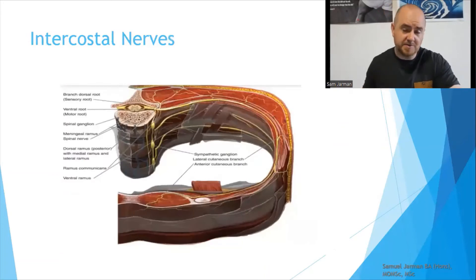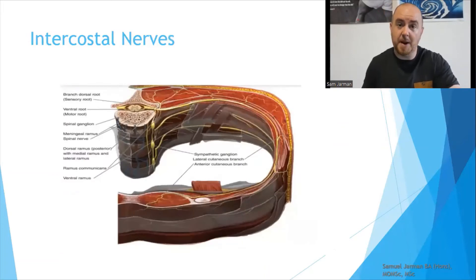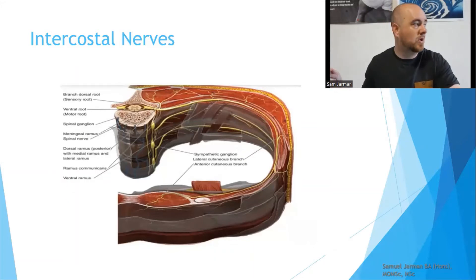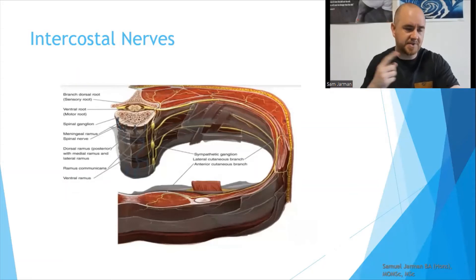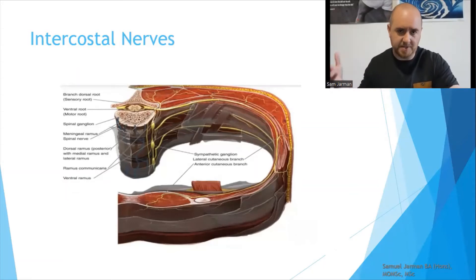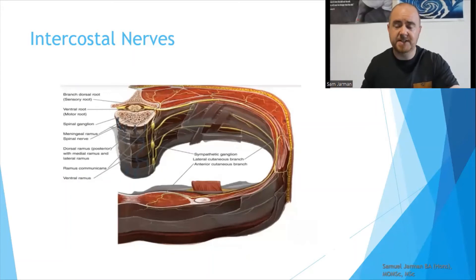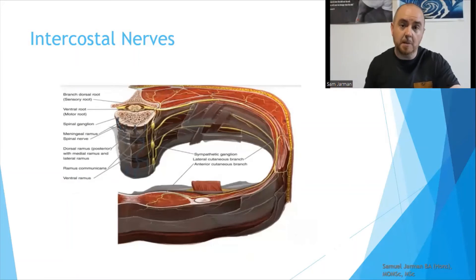The nerves that are going to supply the region are going to be primarily the intercostal nerves. In the case of the internal oblique muscle, it will receive some innervation from the upper regions of the lumbar plexus. Please note — if I said intercostal muscles in a previous slide, I meant the internal oblique and the external oblique.